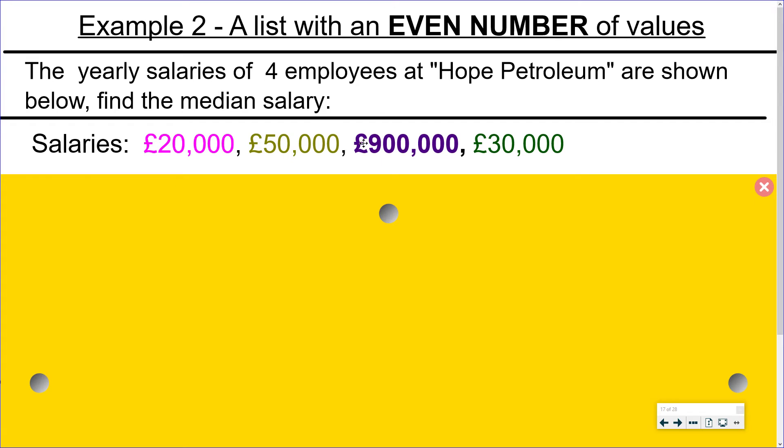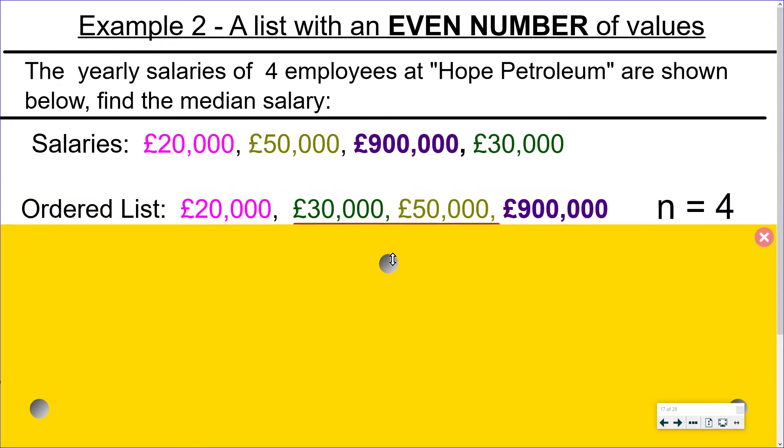So we have our list of salaries here. So remember the median is the middle number of an ordered list of numbers. So let's order them from smallest to largest. So I put them in order and again I should point out that this list has four values in it and four is an even number.